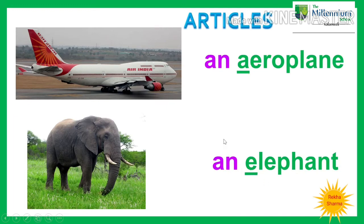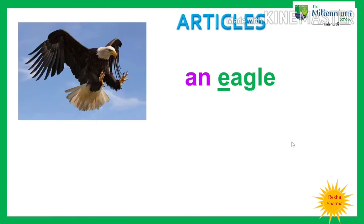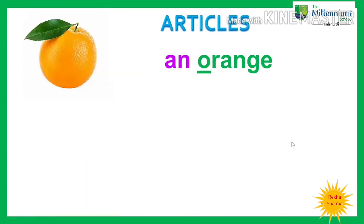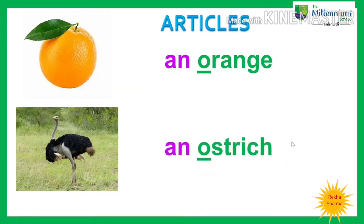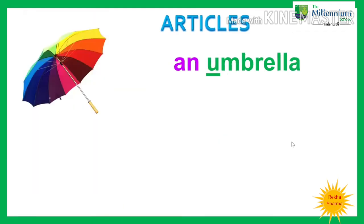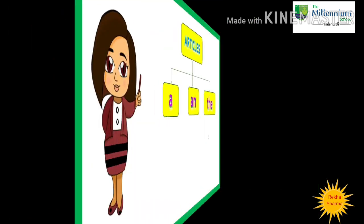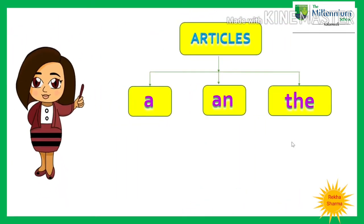Let's see some more examples: an eagle, an insect, an orange, an ostrich, an umbrella, an uncle. Now we have seen the articles A and AN.